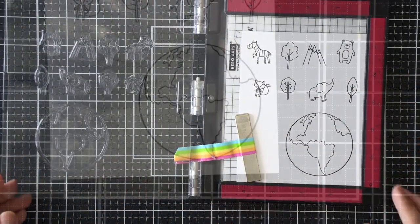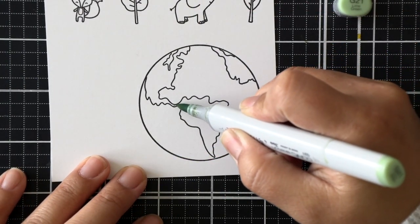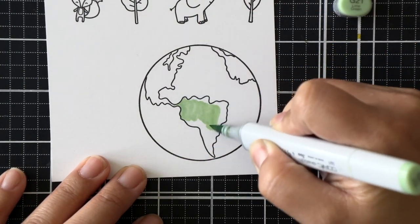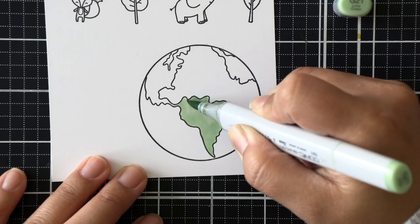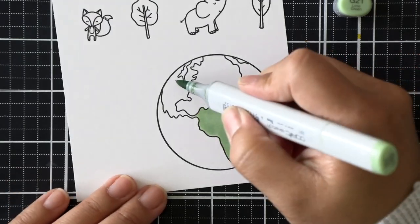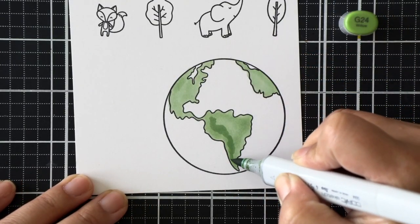For the globe, I saw one of the MFT design team members color this in a way that kind of looks like a satellite image of the world, you know, with the textures of the mountains and stuff. So I thought that was really neat and I wanted to imitate that.